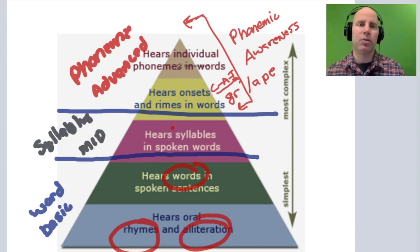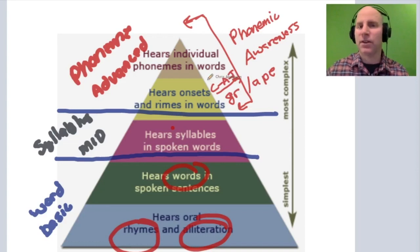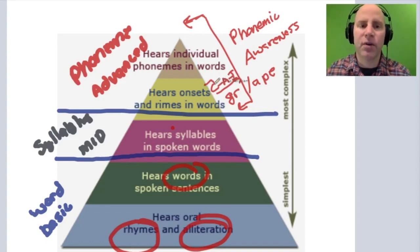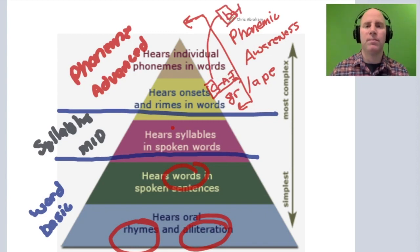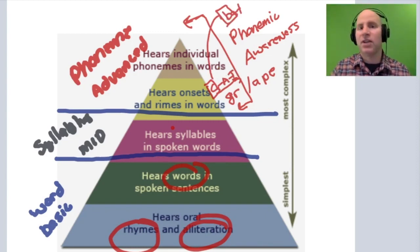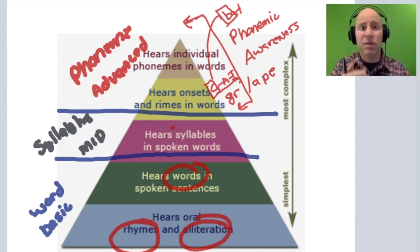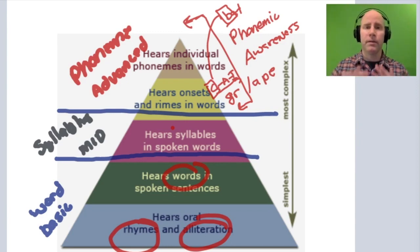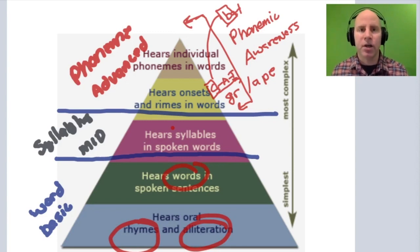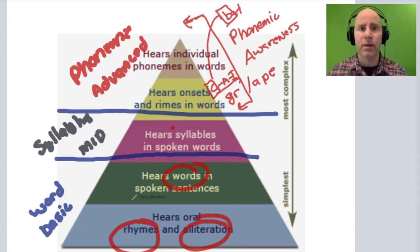The last stage of phonemic awareness involves deleting and manipulating individual phonemes in a word. For example, if a child takes the word 'cat,' identifies the first sound as /k/, and then substitutes the C for a B to get 'bat' — this is an advanced part of phonemic awareness where the child is not only hearing and identifying individual phonemes but also manipulating, changing, or substituting them.